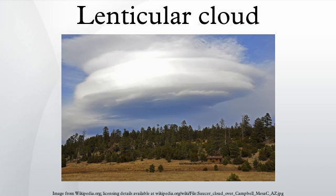Lenticular clouds are stationary lens-shaped clouds that form in the troposphere, normally in perpendicular alignment to the wind direction. Lenticular clouds can be separated into altocumulus standing lenticularis, stratocumulus standing lenticular, and cirrocumulus standing lenticular.